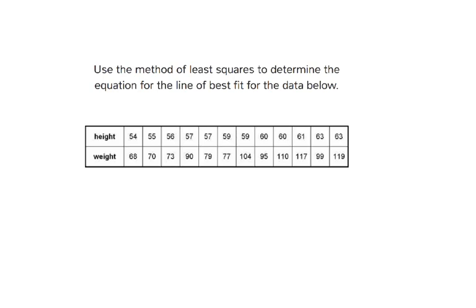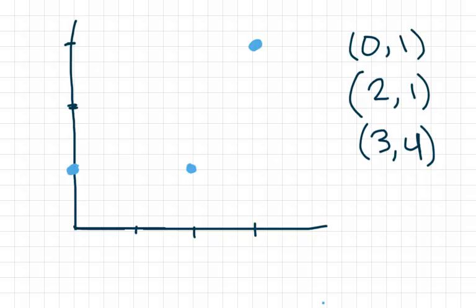Use the method of least squares to determine the equation for the line of best fit for the data below. We've got a lot of data here with big numbers, so we're going to start with something simpler. We're going to find the line of best fit for these three data points.